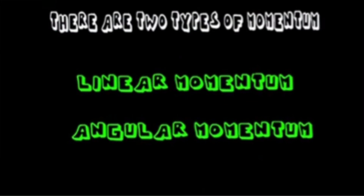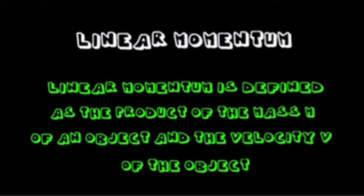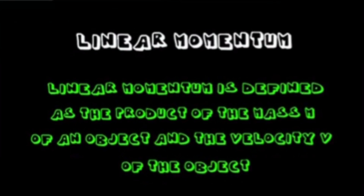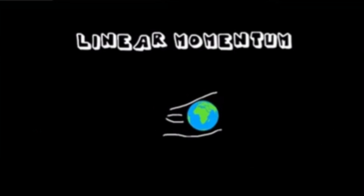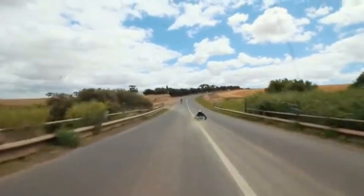So there are two types of momentum: linear momentum and angular momentum. Linear momentum is like we were just discussing, where an object keeps its linear motion. Linear momentum is defined as the product of the mass m of an object and the velocity v of the object — in other words, you need mass and velocity to have momentum. For example, throwing a ball going straight: it has momentum — mass and velocity.